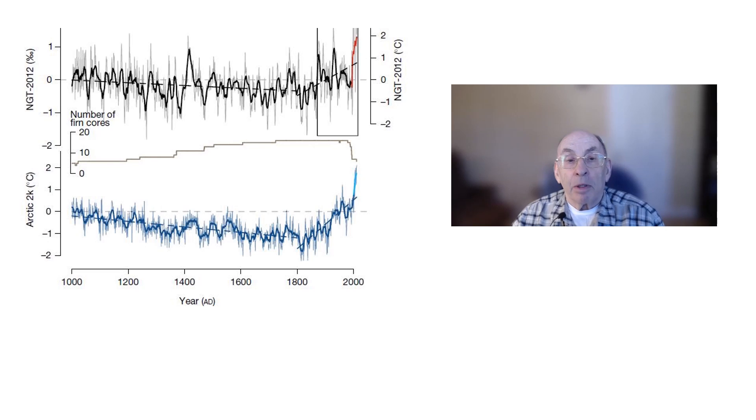They also examine correlations between the Greenland temperature results and ice melt from the Greenland ice sheet. They note that the Greenland ice has been melting faster than glaciers elsewhere on the planet and that the volume of fresh water coming from Greenland ice melt contributes more to sea level rise than thermal expansion from rising global temperature.